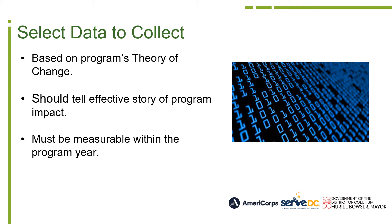The first step is selecting the data you want to collect. It is essential that the data you select be logically linked to program activities and desired outputs or outcomes. The first place to start is your logic model — a visual representation of the applicant's theory of change — as it will identify a good portion of the data you need to collect, including data about outputs and outcomes. Programs should not select generic variables; you want data that tells the story of the program's impact.